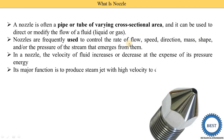The major function of a nozzle is to produce a steam jet with high velocity to drive a steam turbine. We mention this major function because we are studying nozzles in the context of a thermal power plant — specifically a steam power plant. The nozzle increases the velocity of steam, which then strikes the turbine blades, causing the blades to rotate and the turbine to produce mechanical energy.